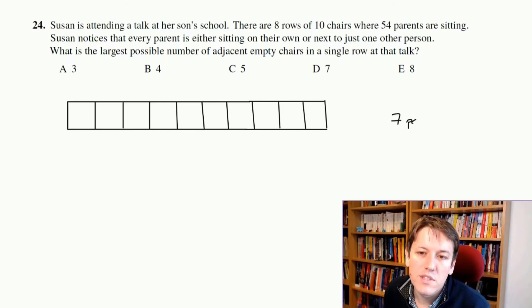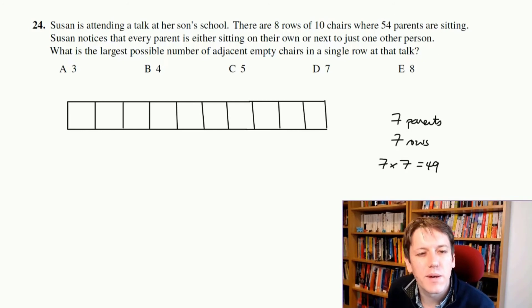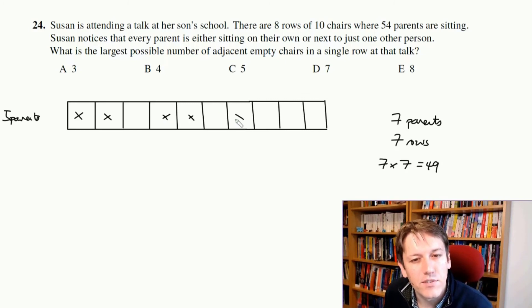So I've got seven parents. And if I put seven parents in each of seven rows, then that's seven times seven, which is 49 parents in those rows. So that leaves five parents for the last row. And this is the one where I'm going to try and design the biggest gap possible. So again, I could try and put two next to each other here on the side, I have to leave a gap, put two next to each other, leave a gap, and then I've got to put one somewhere.